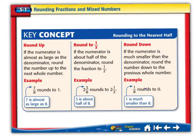Now let's talk about rounding down. If the numerator is smaller than the denominator, round the number to the previous whole number. In other words, 1 eighth would round to 0. 1 is much smaller than 8, so it's not nearly a whole, so it's going to be closer to 0.